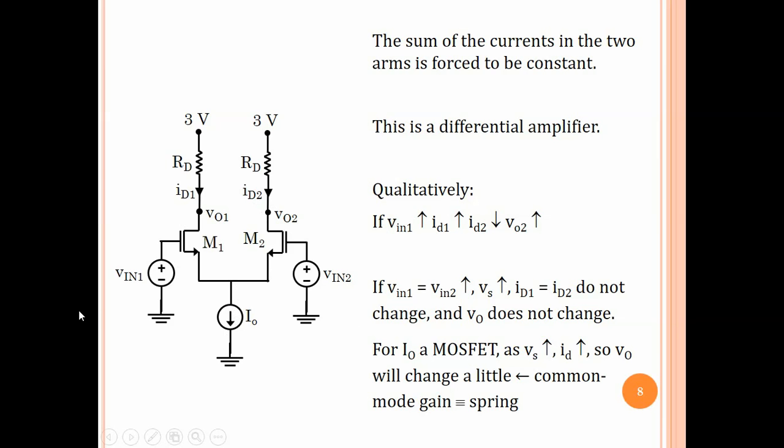Qualitatively, suppose we say that if V_in1 increases, the current in M1 will increase because the gate voltage has increased. And if this current increases, the fact that the total of the two currents is constant would force this current to decrease so that V_O2 will be affected even by a change in V_in1. That is the basic principle of a differential amplifier.